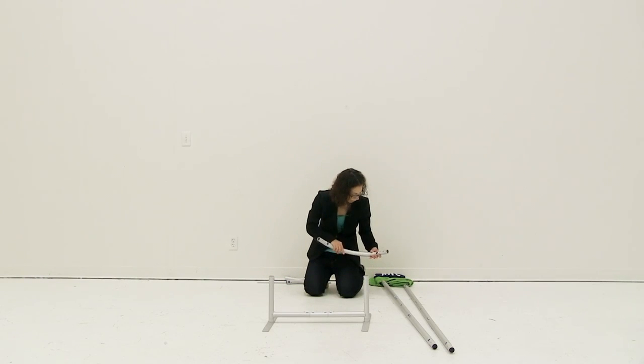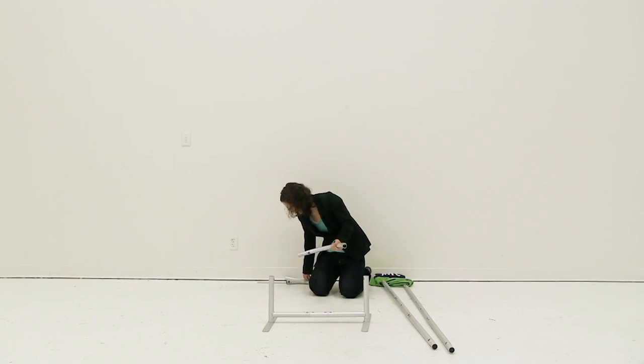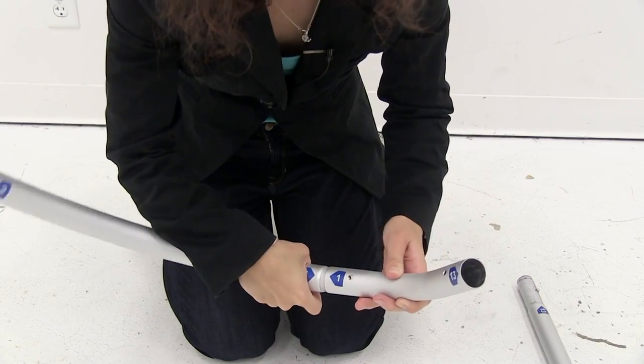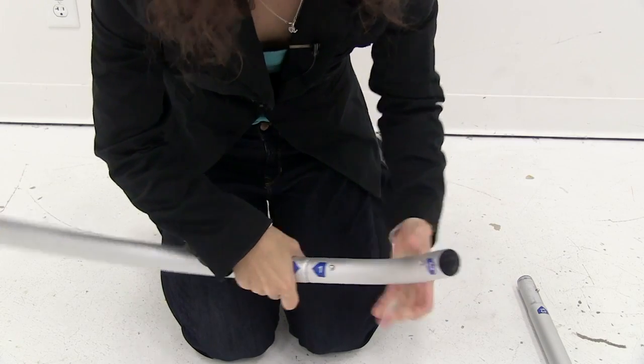I'm just going to match up the numbers to the correlating numbers on the pole. You're going to do this for all the pieces, connect them together matching the numbers.